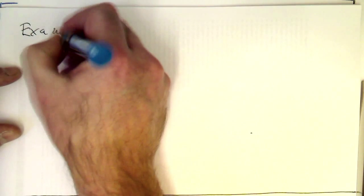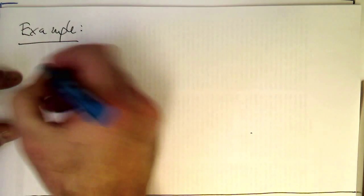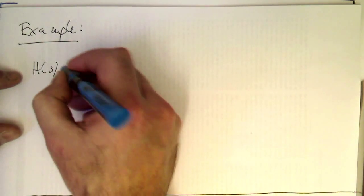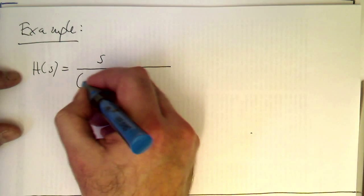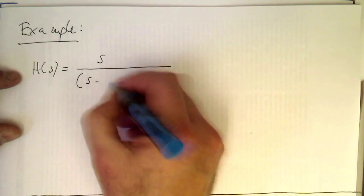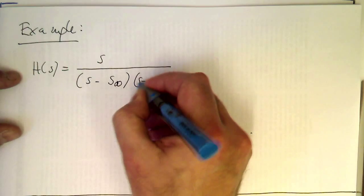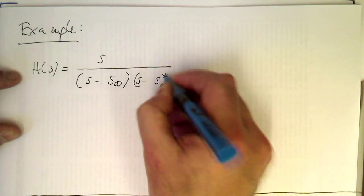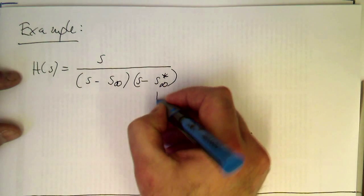Let's use as an example: H of S equals S divided by (S minus S∞) times (S minus S∞*), where the star denotes the complex conjugate.